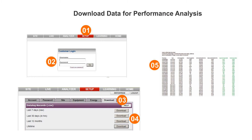Data can also be downloaded for further analysis by logging into Setup with the username and password found in the SolarView enclosure. Click the Download tab, then select the time period of interest to get CSV formatted files suitable for spreadsheet calculations.